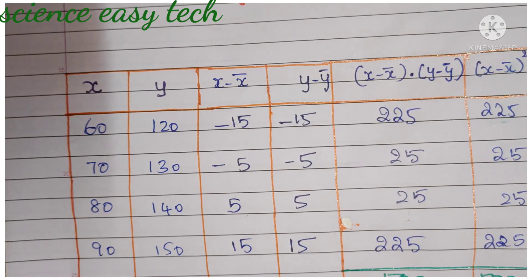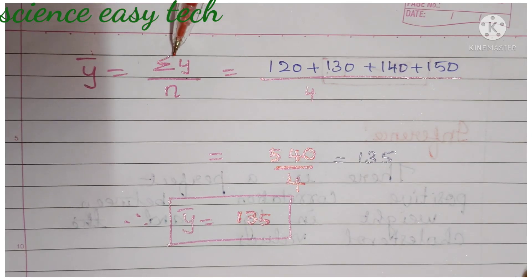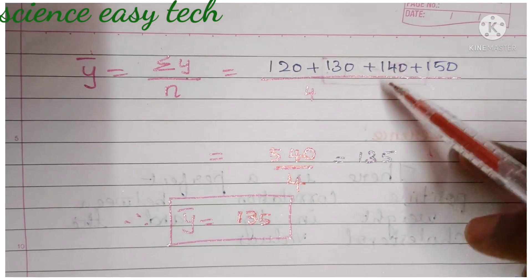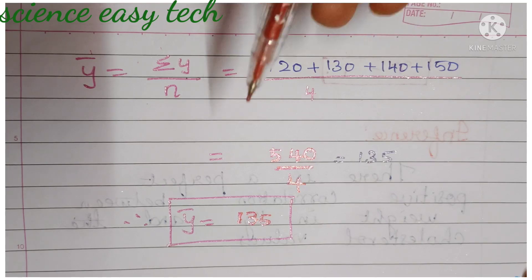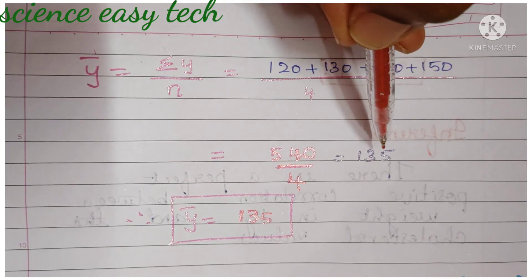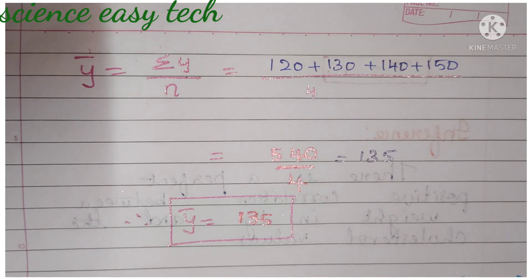Next, we have to find ȳ. The procedure is the same: ȳ = Σy ÷ n. Add all y values: 120 + 130 + 140 + 150 = 540, divided by n = 4, which gives 135. Therefore, ȳ = 135. So x̄ = 75 and ȳ = 135.